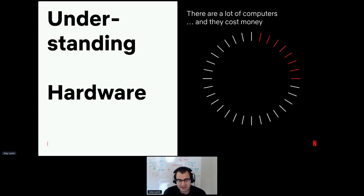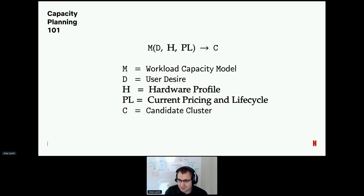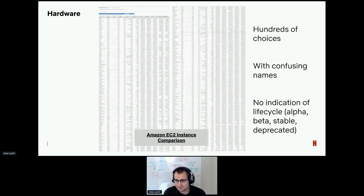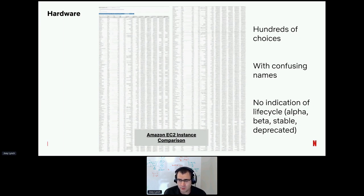To understand hardware, we have to step back and look at all the computers we can buy — and it turns out there are lots of them. If you've gone to your cloud vendor page, you find hundreds of different choices: some have memory, some have disks, some have CPUs. I've picked out the EC2 instances page here. This is really problematic because we can't fill in our equation if we don't actually understand our hardware.